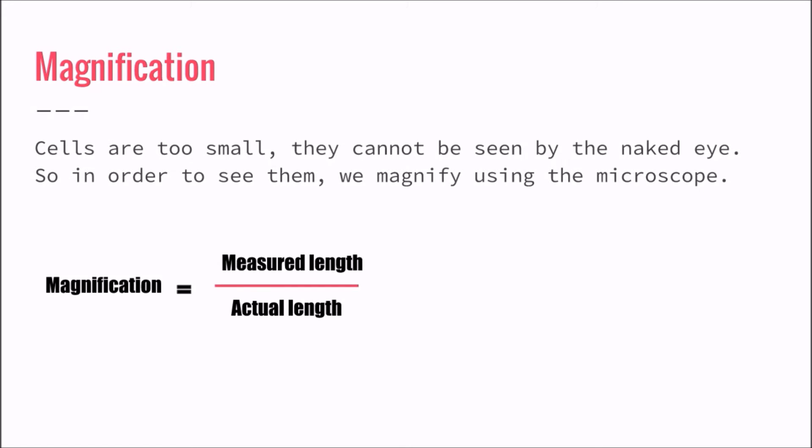Magnification. Cells are way too small — they cannot be seen by the eye itself. So in order to see them we need to magnify or zoom using the microscope. Magnification is equal to the measured length over the actual length.